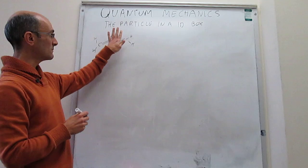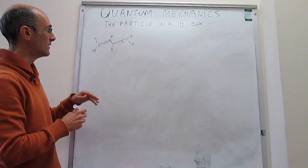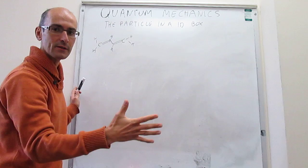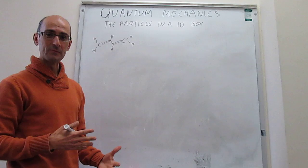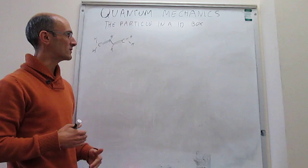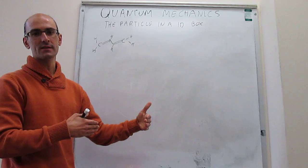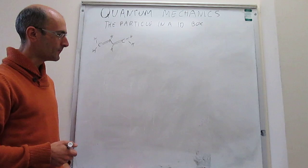The potential can be approximated to be constant while the electrons are moving inside the molecule, but if they attempt to go outside the molecule then the potential energy increases a lot because they are not attracted by the nuclei anymore. So to a good approximation those electrons can be reasonably modeled by a 1D box where the potential is constant or zero inside the box and infinity outside the box.